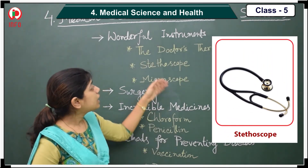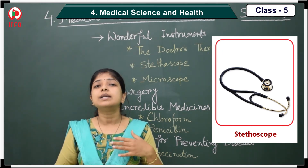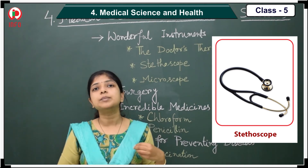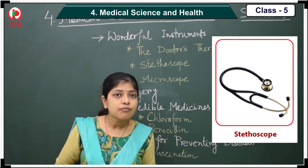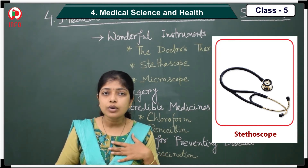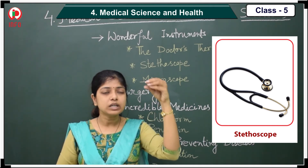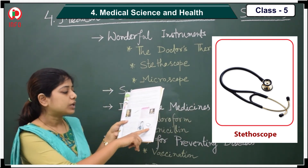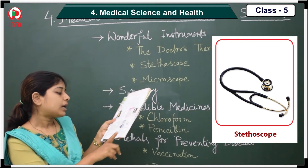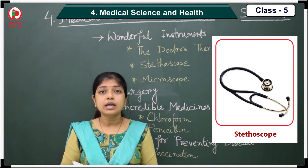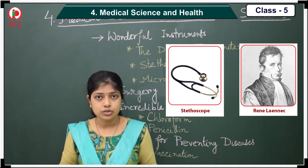Now I want to talk about the stethoscope. What does the stethoscope do for us? Actually, it tells us the heartbeat. How is it possible? With the help of multiple reflection of sound — the sound passes through the stethoscope. The stethoscope looks like this. And you may ask: who invented it? Rene Laennec. Rene Laennec invented the stethoscope first.